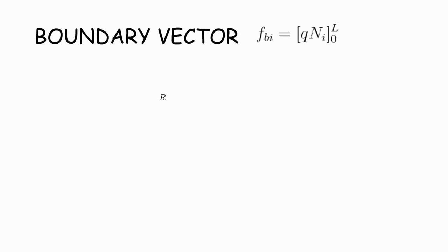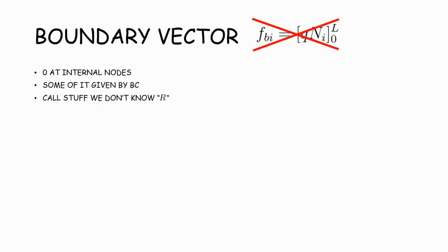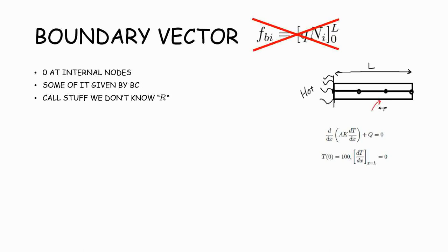Boundary vector. Remember this? Well, forget it. There are some rules for boundary vectors. It's basically 0 at internal nodes. Some of it is given by boundary conditions. And whatever is not given by boundary conditions, we'll just call it R. Here's our mesh. And these are our boundary conditions. So t at 0 is 100. That has nothing to do with our boundary. Our boundary is q and i. Remember q is dt dx. So we know that q at x equals l is 0. So our boundary vector at node number 4 will be 0. So here's our boundary vector. We don't know what this is. This is an internal node. This is an internal node. And this is given by the boundary condition.